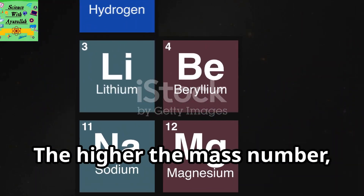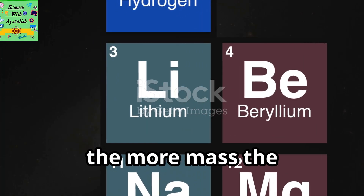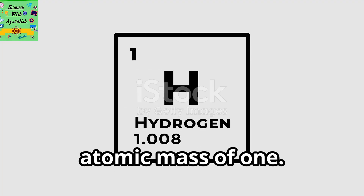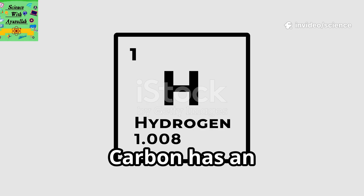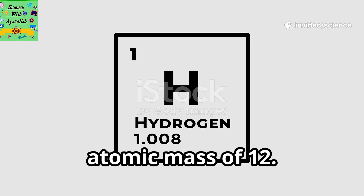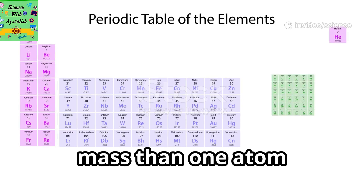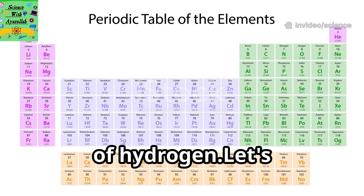The mass number for lithium tells us the number of protons and neutrons is 7. We know there are 3 protons, so there are 4 neutrons. The higher the mass number, the more mass the atom has. Hydrogen has an atomic mass of 1, and carbon has an atomic mass of 12, so one atom of carbon has 12 times more mass than one atom of hydrogen.